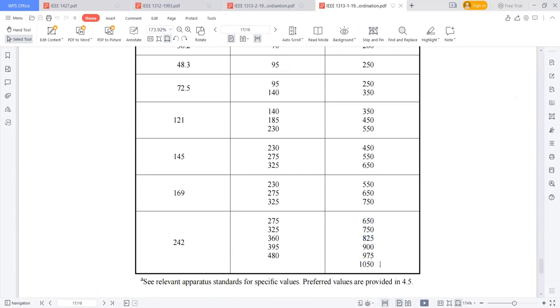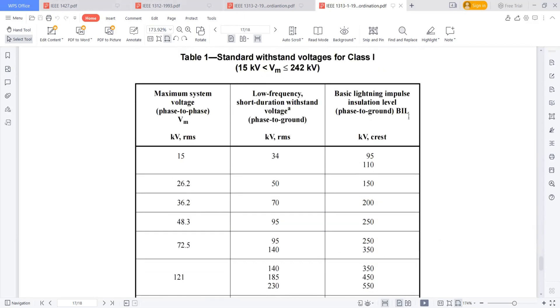So for Indian projects, all the projects we are selecting 1050, which is the worst case. If you want to do the optimization, then you have to do the installation coordinates study. So then maybe your project is coming for 750 or maybe 650. So you are reducing the cost in that way.